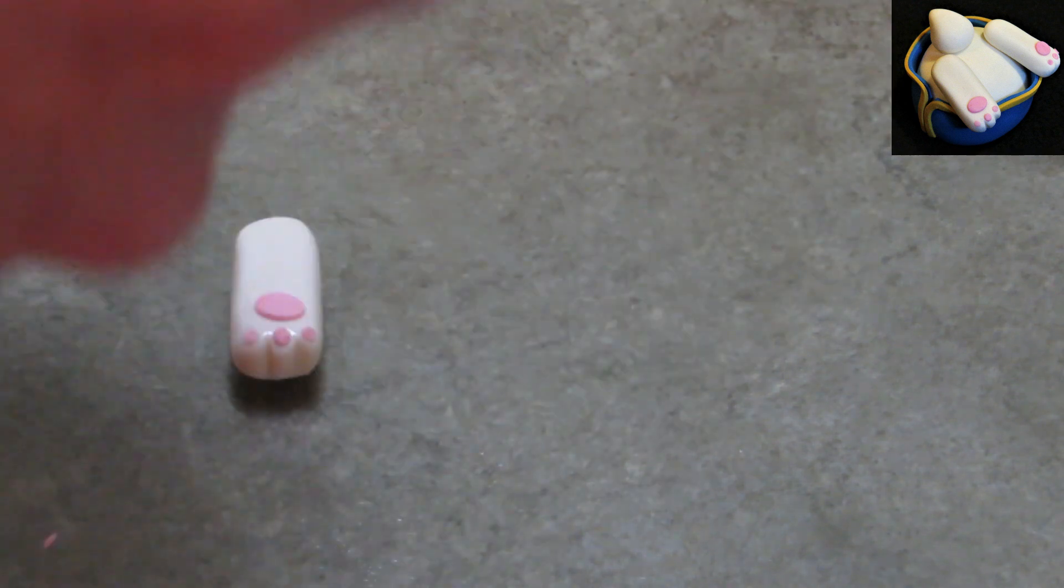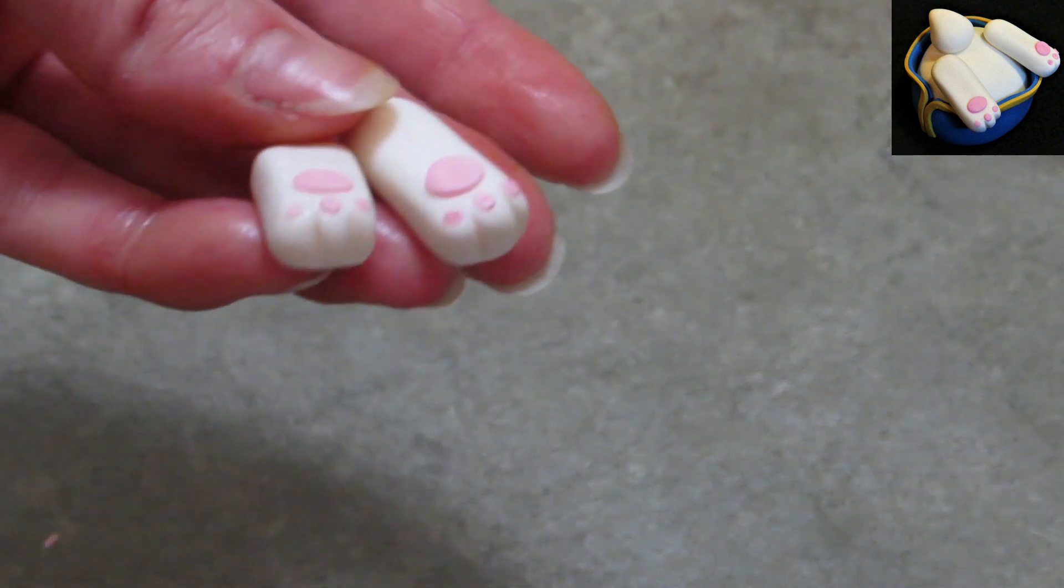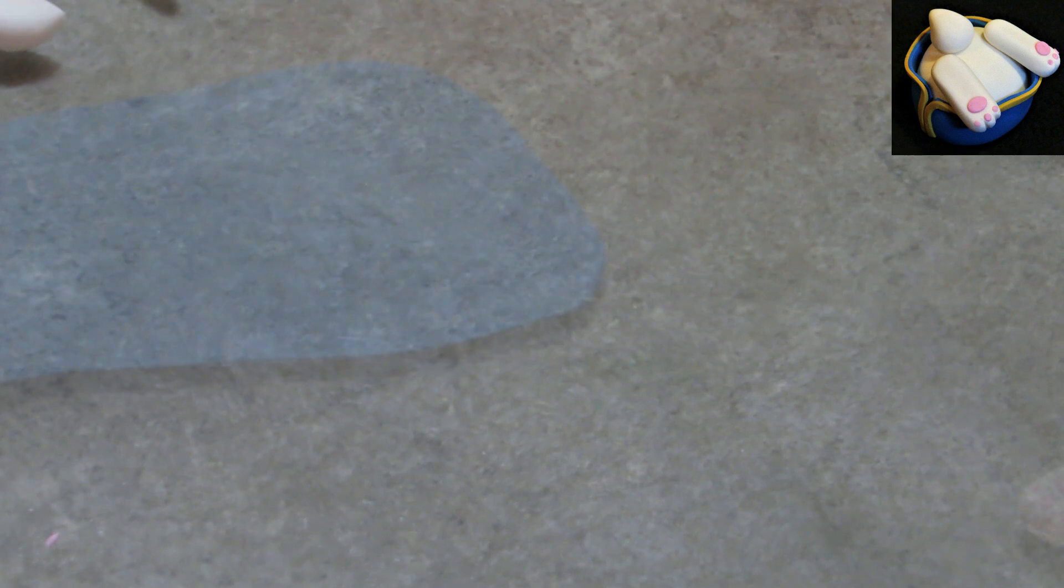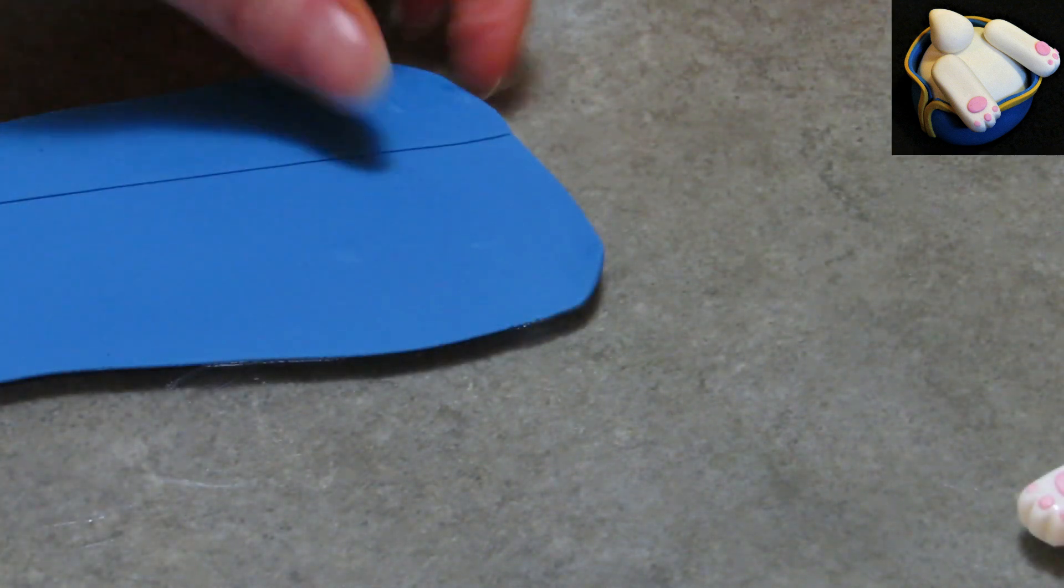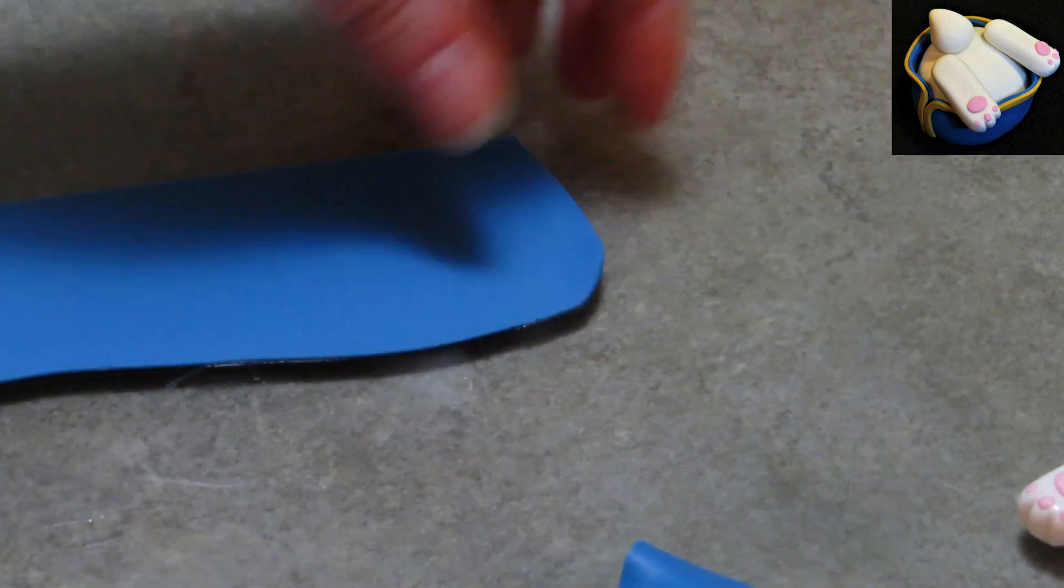All right. So yes, there's little feet. Aren't they adorable? The answer is yes. And just to show you, this is kind of how I did the coat. I just took some blue, rolled it out nice and thin, cut a rectangle out of it.